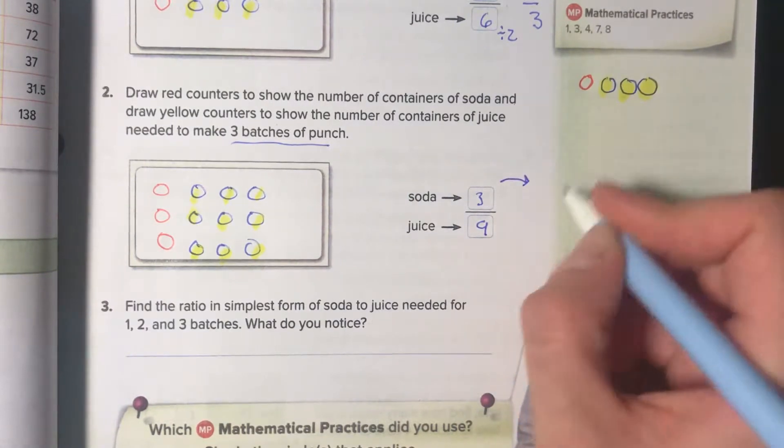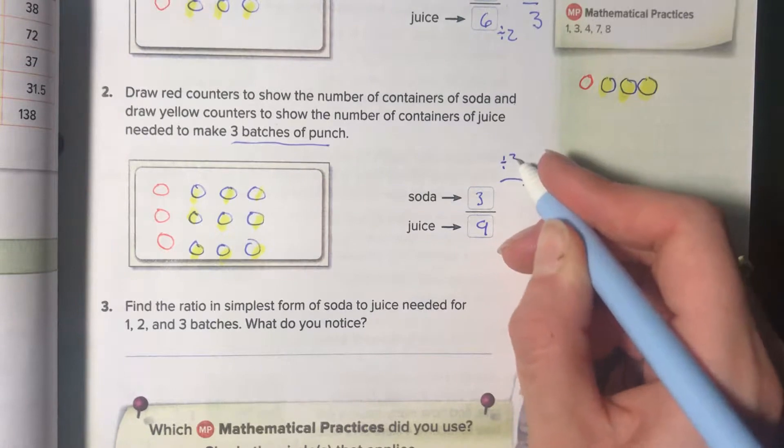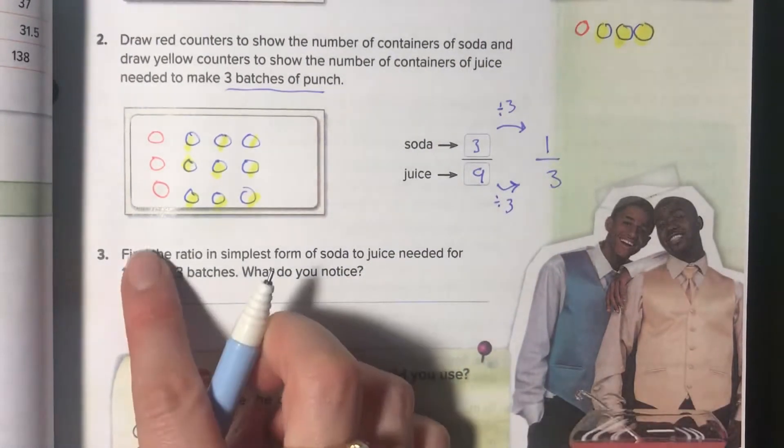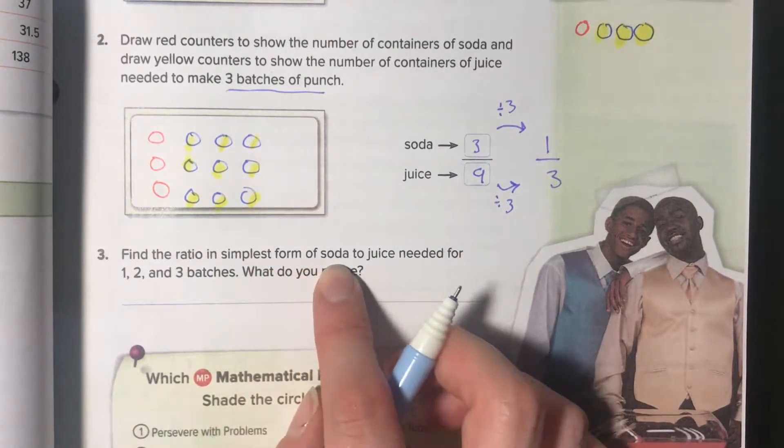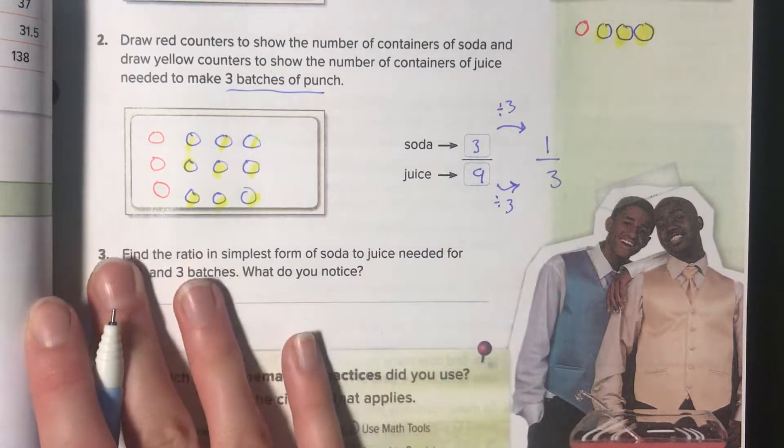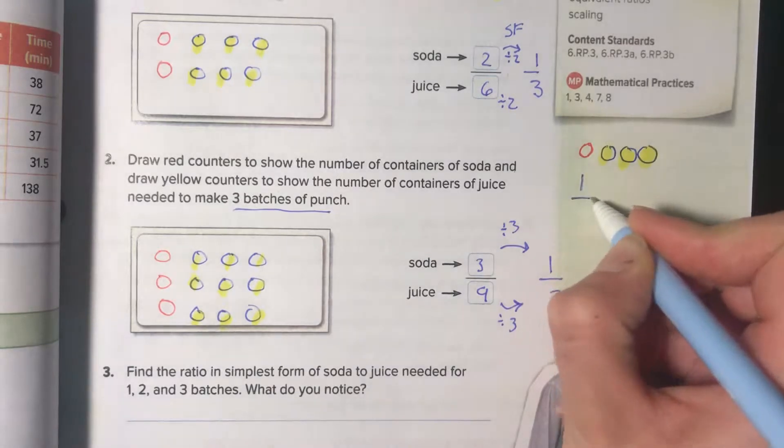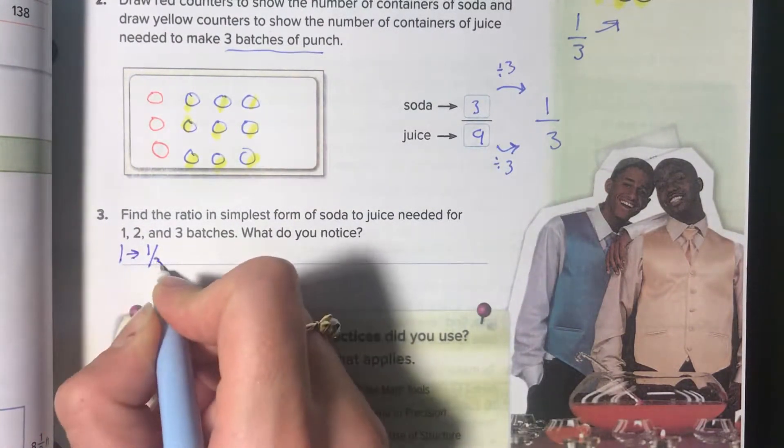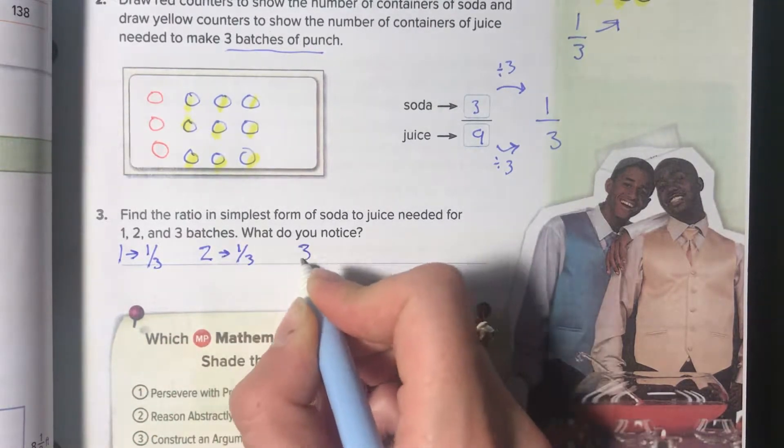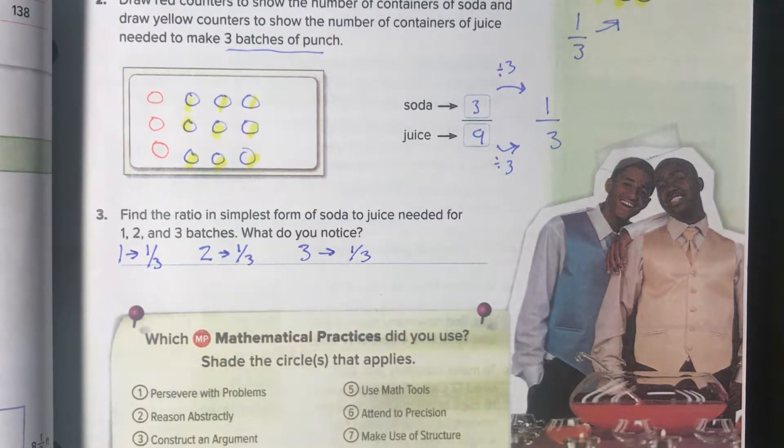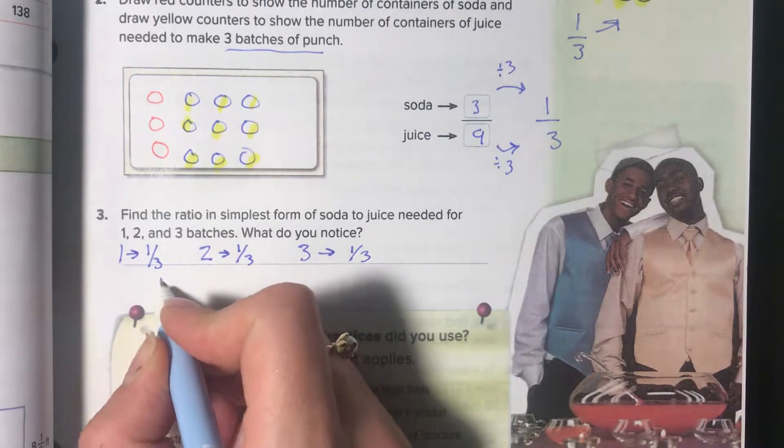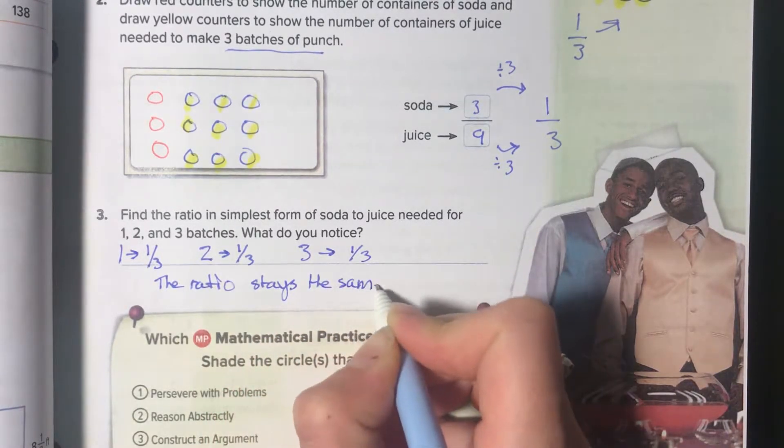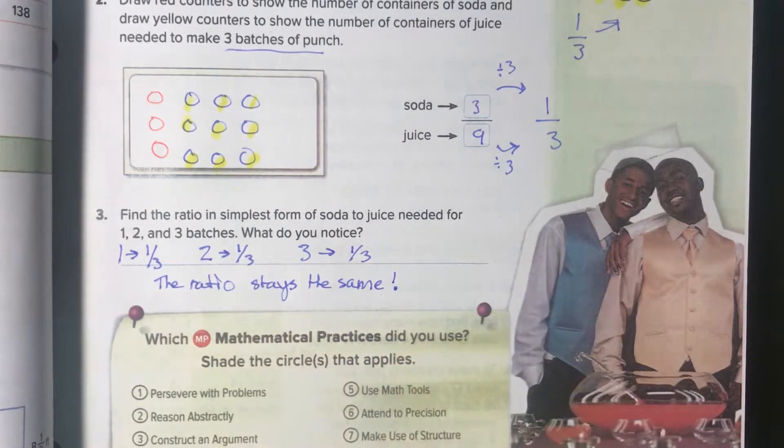Let's imagine we're putting that in simplest form. Divide by three and divide by three, gives us one to three. Interesting. It says find the ratio in simplest form of soda to juice needed for one, two, and three batches. One batch was one to three, two batches was one to three, and three batches was one to three. What do you notice? The ratio stays the same. Interesting, the ratio stays the same.